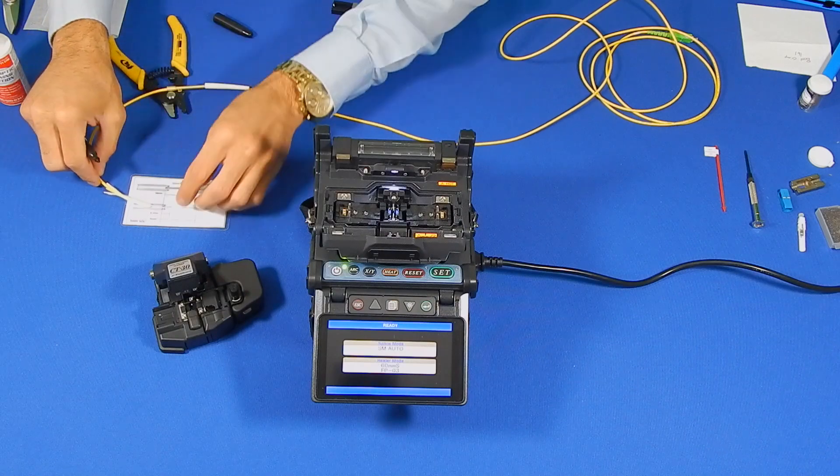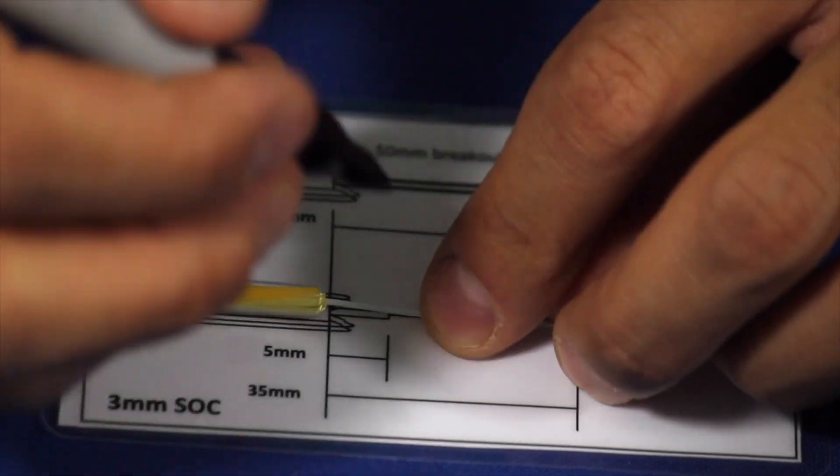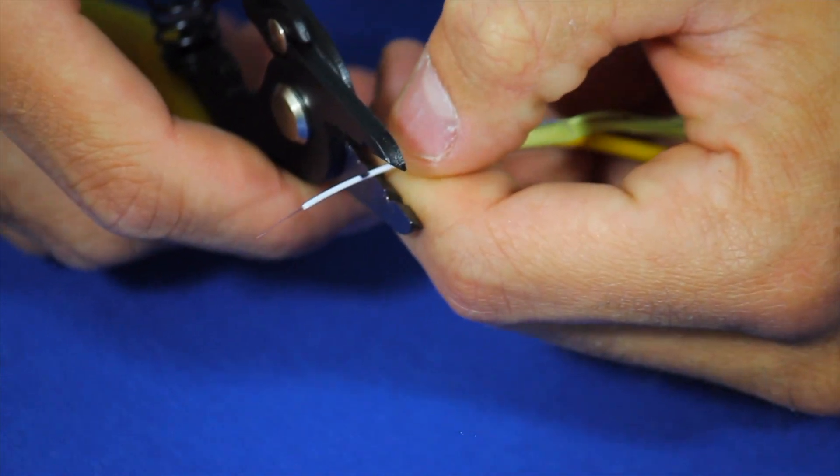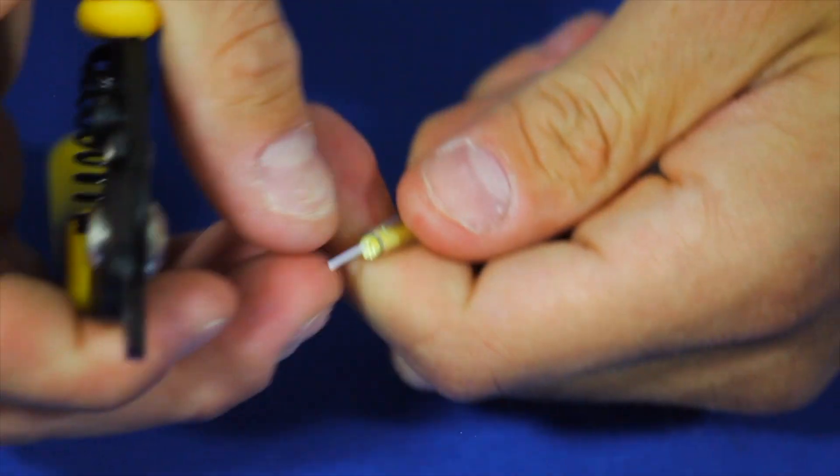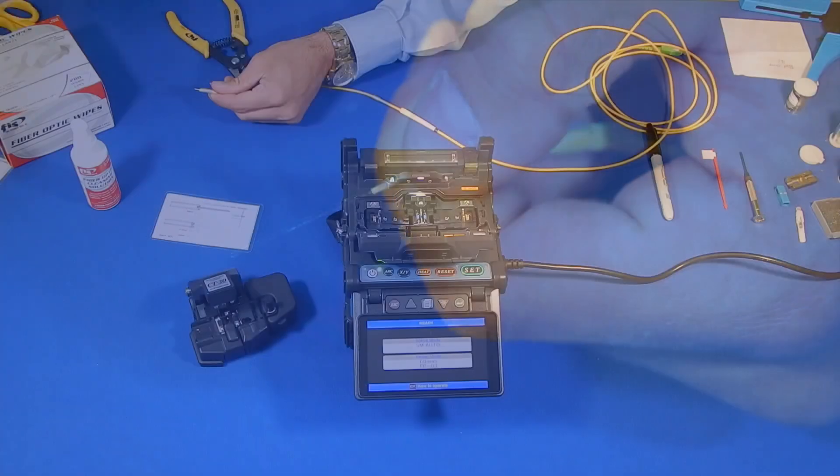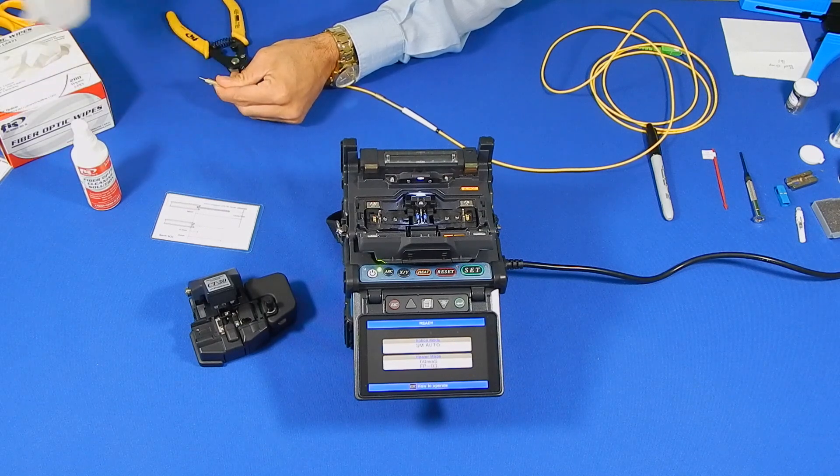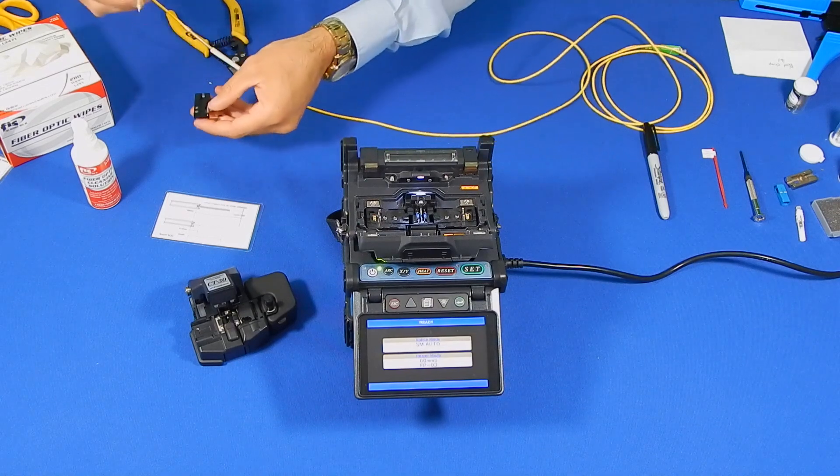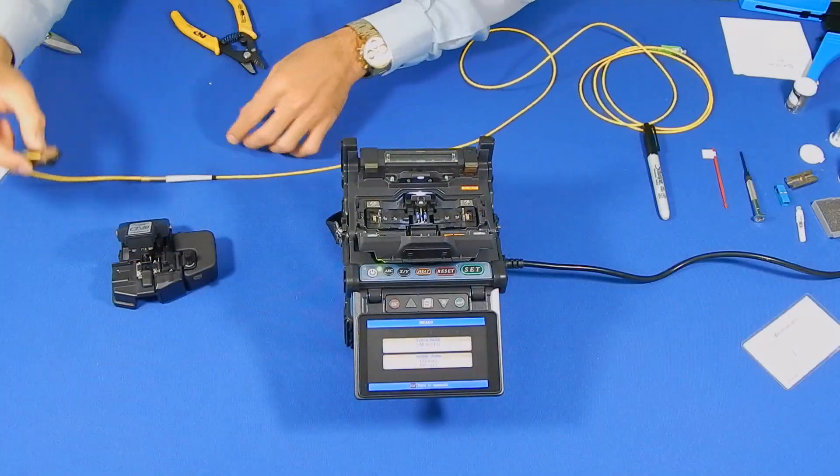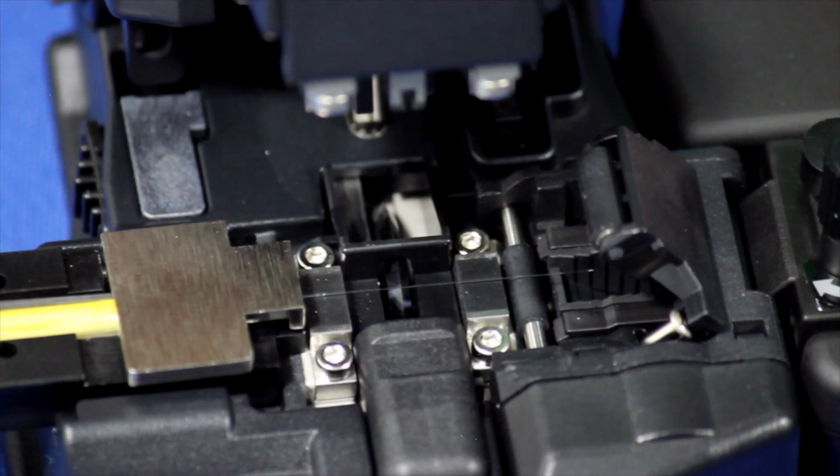Next, mark the 900 type buffer to 5mm. Strip, remove all of the Acrylite coating and clean. Next, place it into the cordage holder as shown. Place into the cleaver. Make sure the 900 micron buffer is against the pad and not resting on it. Cleave the fiber.